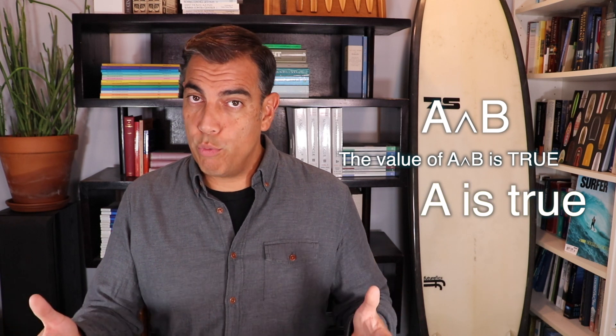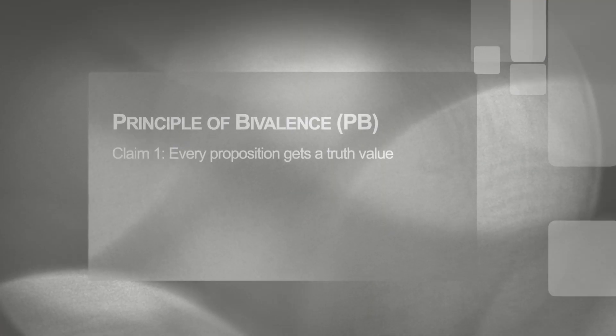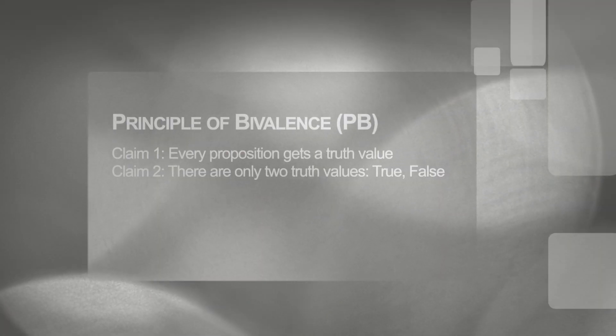For example, if I have the proposition 'A and B' and I assign the truth value true to that, then its component proposition A will also get the value true. The principle of bivalence is really making two separate claims. First, that every proposition is going to get a truth value — we're going to assign truth values to each and every proposition, and there won't be any that we leave out.